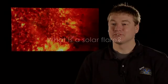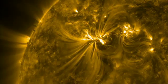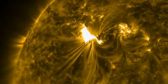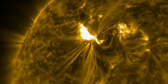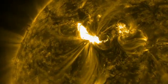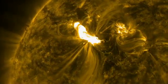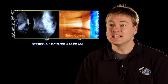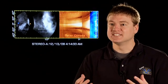A solar flare is a huge release of energy that converts the magnetic energy of the Sun into heat and into light. It accelerates particles and can really heat up the plasma in a matter of minutes to over 60 million Kelvin.